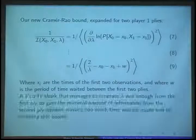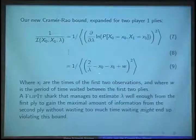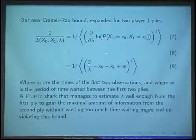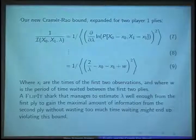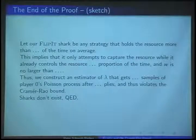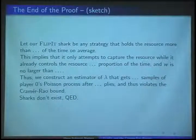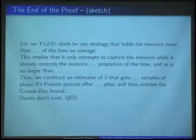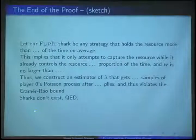I couldn't actually get all the math to work last night. I got a small expression for expanding two-ply of an adaptive player against the Poisson process. This is the Cramér-Rao bound, and this is the Fisher information of just that tiny little two-ply game. The end proof will look something like this: I create a Flip It shark, a player who's unreasonably good, and if they hold the resource for more than a certain amount, that means they will only fail to capture the resource a certain number of times, which means the doubly-as-constant before is going to be larger than some amount, which means you can violate the Cramér-Rao bound — meaning that no player that good exists.